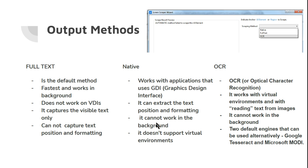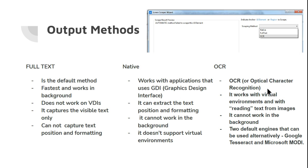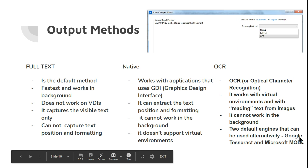OCR, or Optical Character Recognition, works with virtual environments — that is its main benefit. It can also read text from images and pictures using an OCR engine. However, it cannot work in the background. There are two default engines: Google Tesseract and Microsoft. These engines power the OCR extraction.